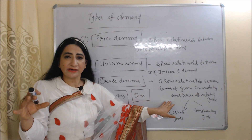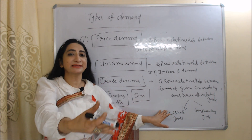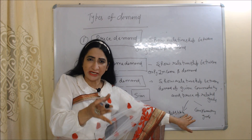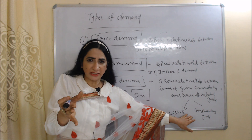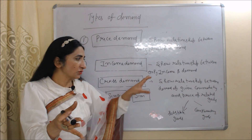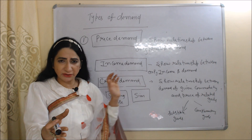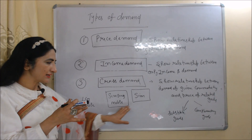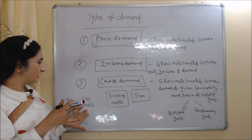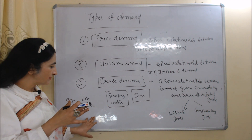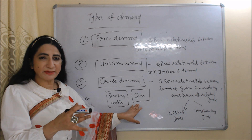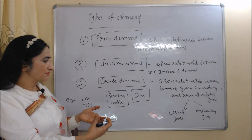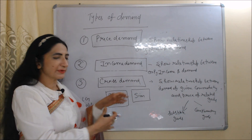As we earlier discussed, substitute goods are those goods which we can replace with each other — for example, coffee and tea. Complementary goods are used together — for example, computer and keyboard. Cross demand shows how demand of a given commodity is influenced by price of related goods. For example, LG mobile, Samsung mobile, and SIM: the substitute of LG mobile is Samsung mobile, and the complementary good is SIM. So cross demand shows how demand of LG mobile is influenced by price of Samsung mobile and price of SIM.